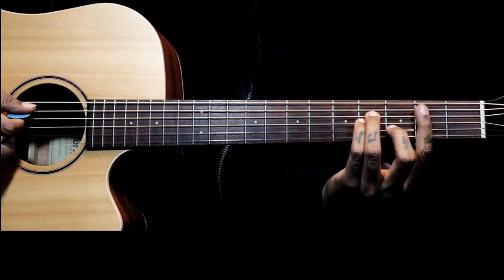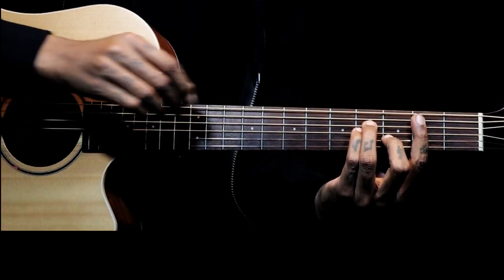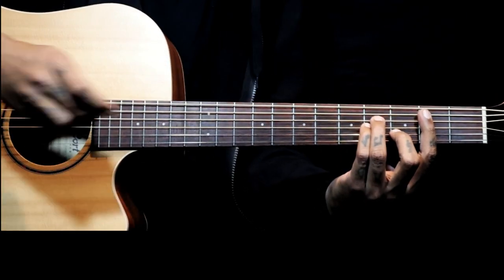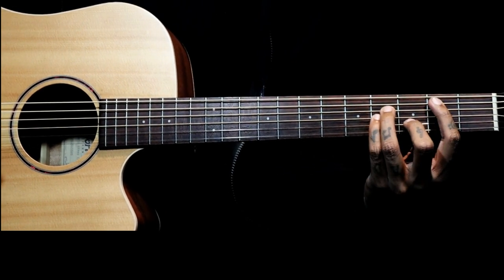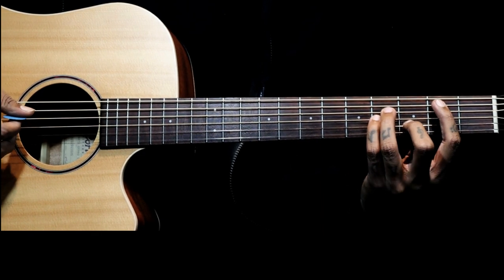For the Bm chord, we are not barring completely on the 2nd fret here. What we do is we just hold 5th string 2nd fret and we use our normal Bm shape with the other fingers.